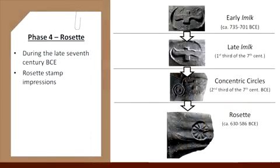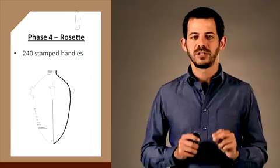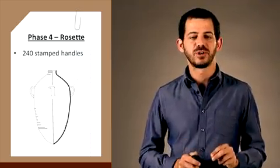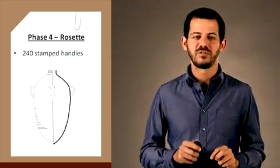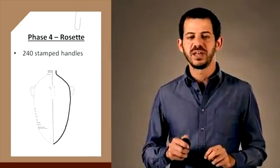The Judahite administration continued to develop in the 7th century BCE, and a new stage was initiated during its last decades. The jar handles were still marked, but this time the emblem was a rosette. 240 jar handles with rosette stamp impressions have thus far been found at various sites within the borders of Judah.